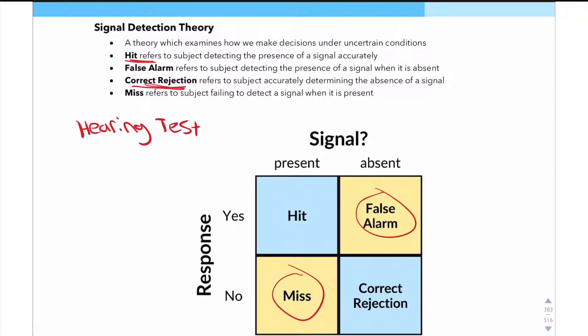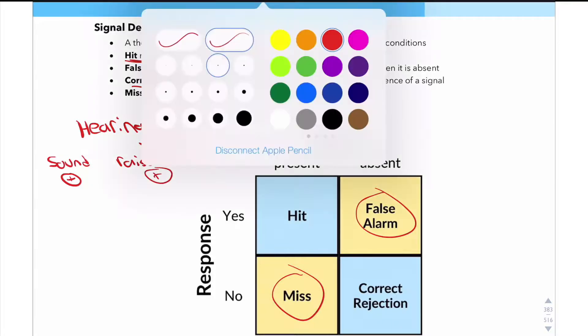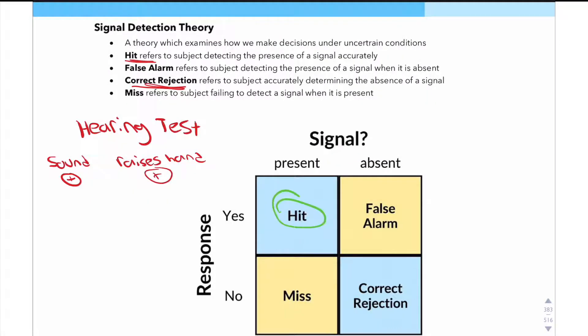So let's say that the sound is present and the subject raises the hand. In that case, that's going to be a hit because the signal was present and there was a positive response and the subject responded. So that's a hit.